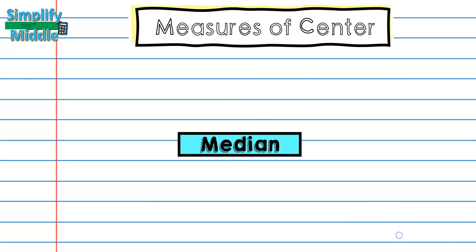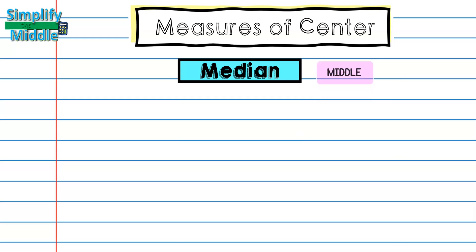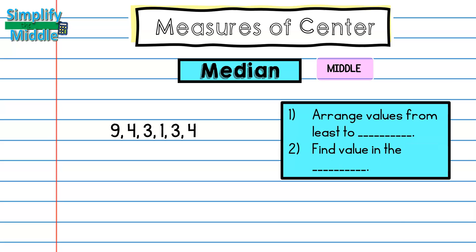Our next measure of center is going to be median. We like to think of median as the middle. So here I have the same data set, 9, 4, 3, 1, 3, 4. And my first step is going to be arranging values from least to greatest. So I'm going to go ahead and take these and rearrange them so that I've got 1, 3, 3, 4, 4, 9. Because I want to make sure that these are all going from least to greatest as my first step.